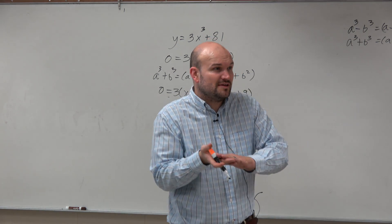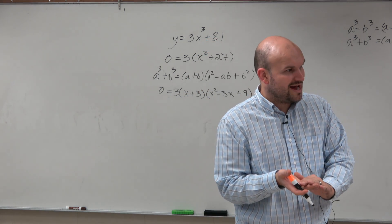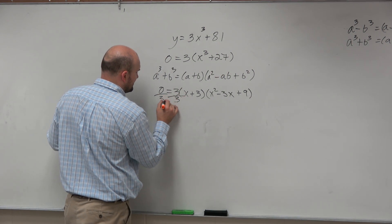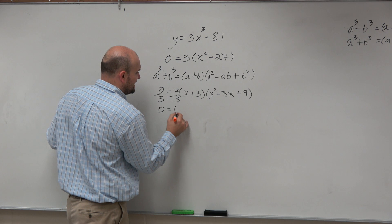Well, it's just a scalar. All that 3 does is stretch and compress the graph. So it's not actually becoming a zero. You can actually divide that 3 out. It's not affecting any of the zeros.